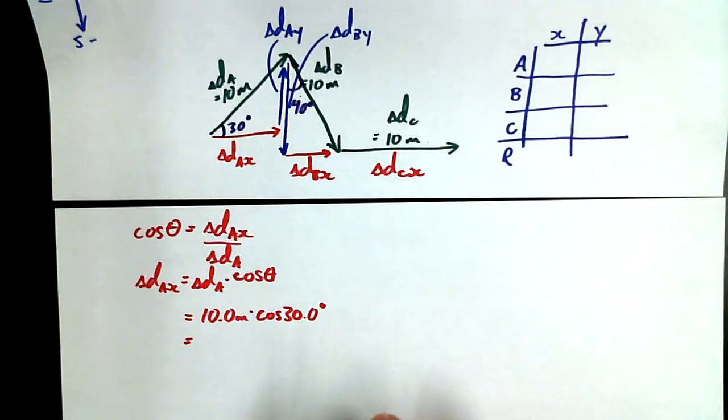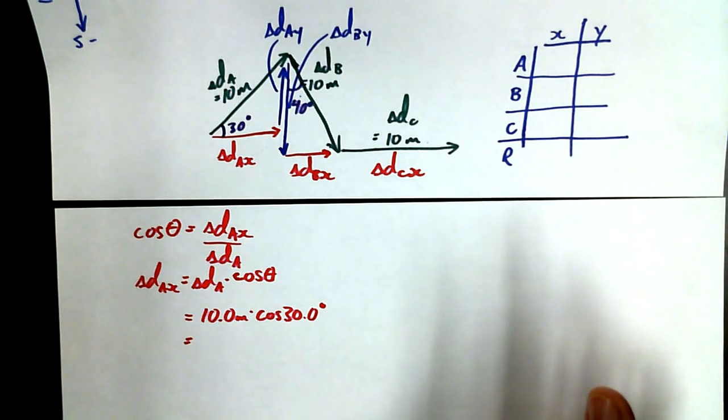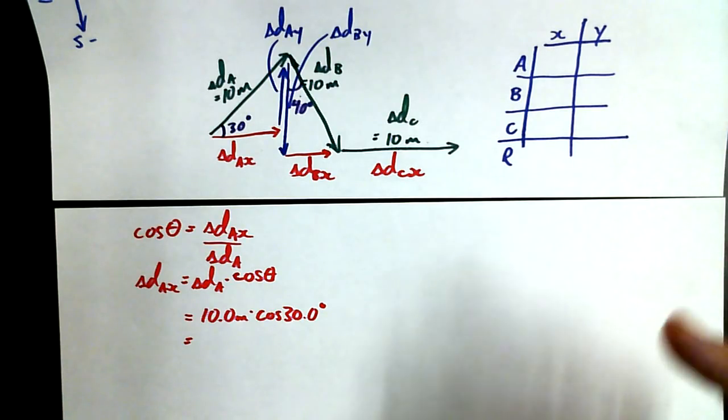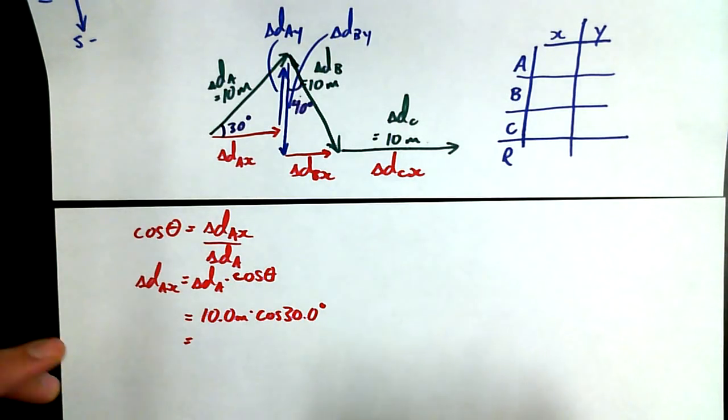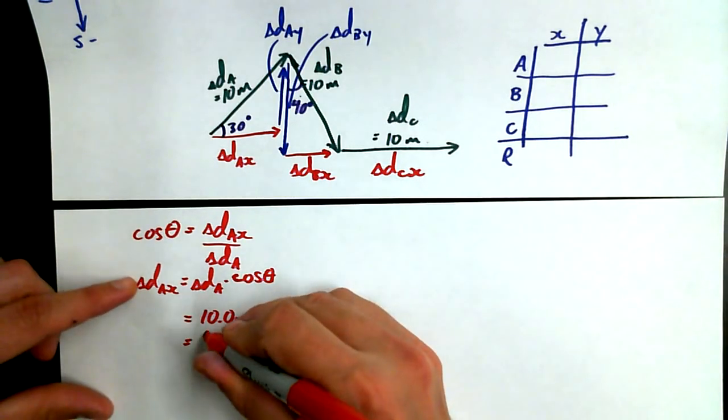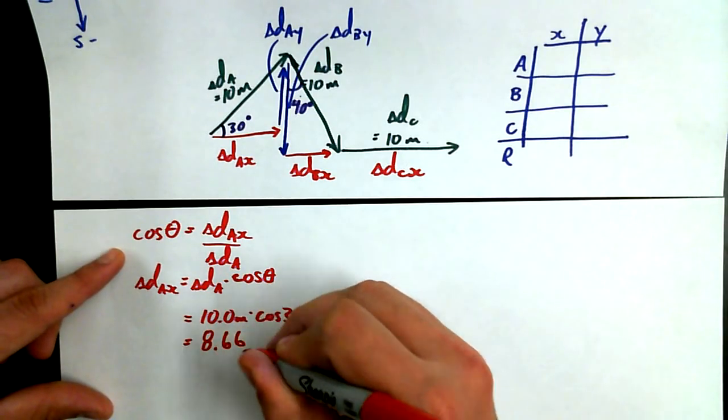Then we have delta dA times cosine of theta is 10 times cosine of 30 degrees. And 10 times cosine of 30 degrees, if you do your math, is 8.66 meters. Beauty.